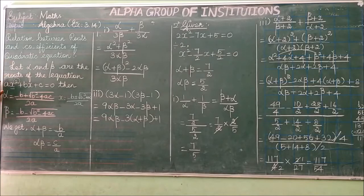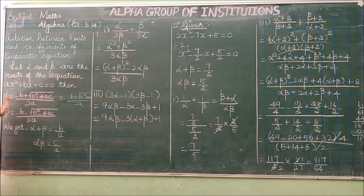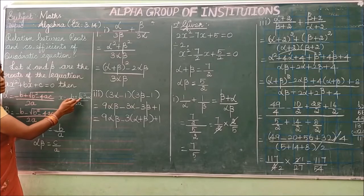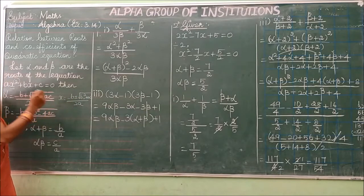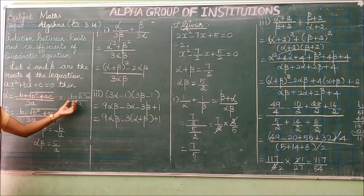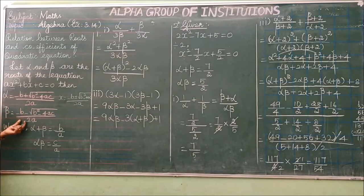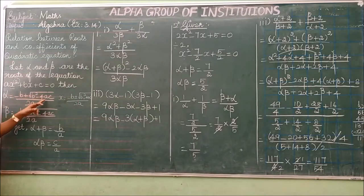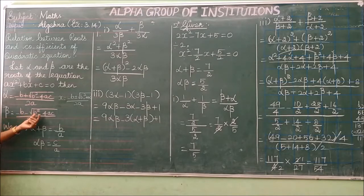Let alpha and beta be the roots of the equation ax² + bx + c = 0. Using the general formula, x = (−b ± √(b²−4ac)) / 2a. The positive part gives root alpha: α = (−b + √(b²−4ac)) / 2a, and the negative part gives root beta: β = (−b − √(b²−4ac)) / 2a.